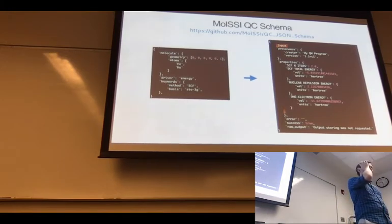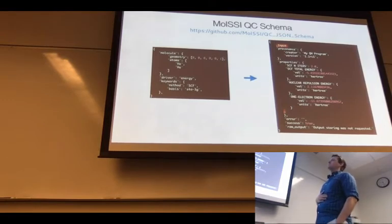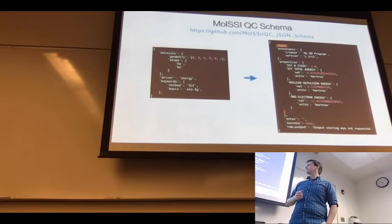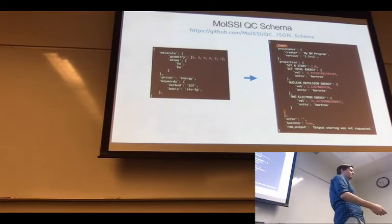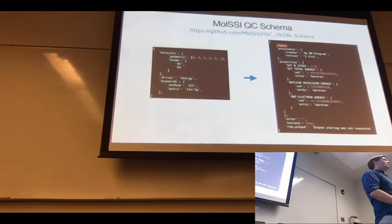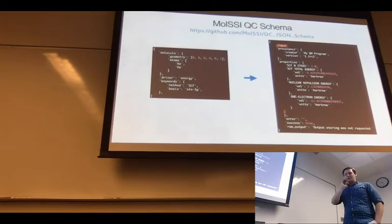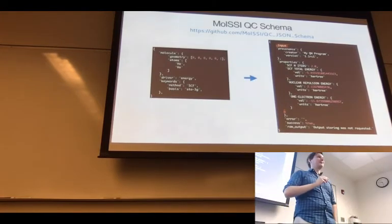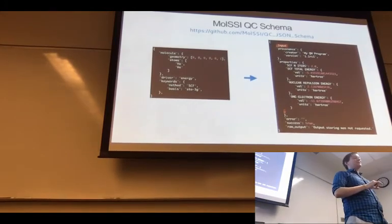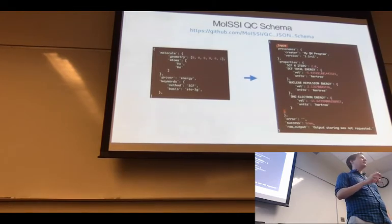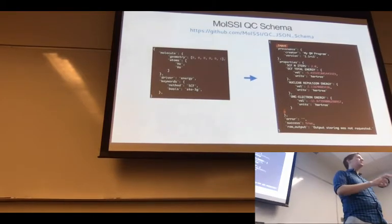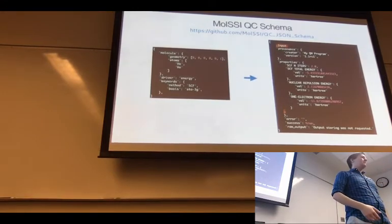[Audience]: The basis is lowercase 'sto-3g' — are you going to have a spec for common basis sets and common functionals? Otherwise you'll have inconsistencies. [Daniel]: That's a really lengthy topic. In terms of basis sets, MolSSI is actually taking over the EMSL basis set exchange. We're going to do basis set hashing for all these things, providing mappings from an approximate representation like STO-3G to an exact representation. The community will need to buy into this standard.